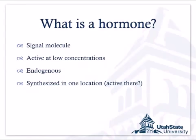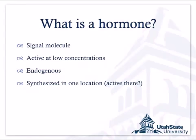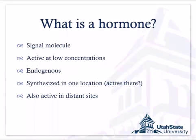A hormone is synthesized or produced in one location, and it may be active at that location or transported to another location in the plant. A lot of us when we took high school biology learned about hormones in human or animal systems — testosterone, estrogen, insulin — but in plants there's a whole different set of them.